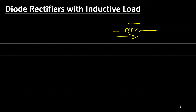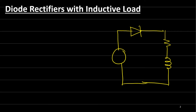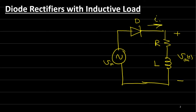Let us consider a single-phase half-wave rectifier with an inductive load. Here we have an inductive load with a resistor, and a simple diode with input. This is V input, and this is D, and this is R, L. And this is the output V out, and here we have the current I out.